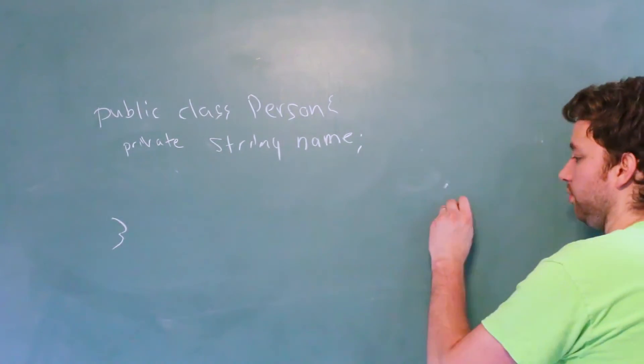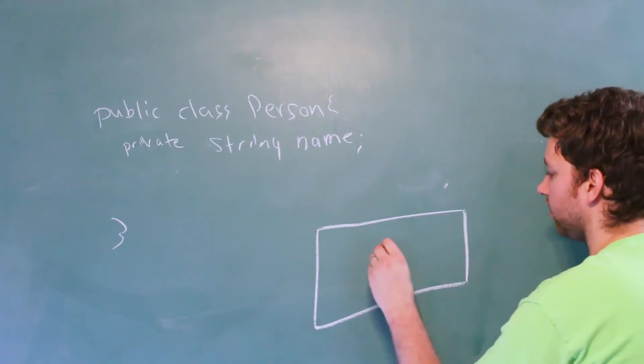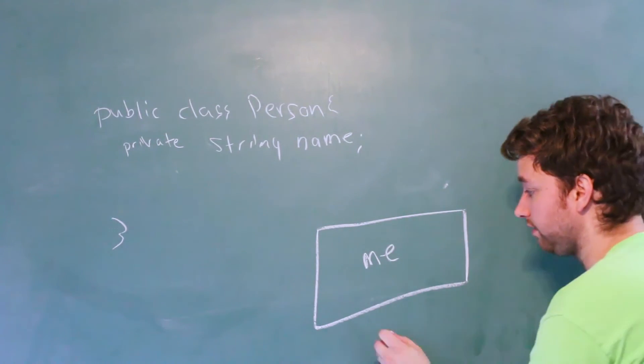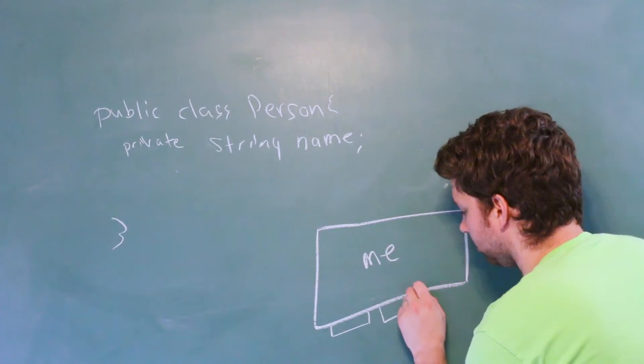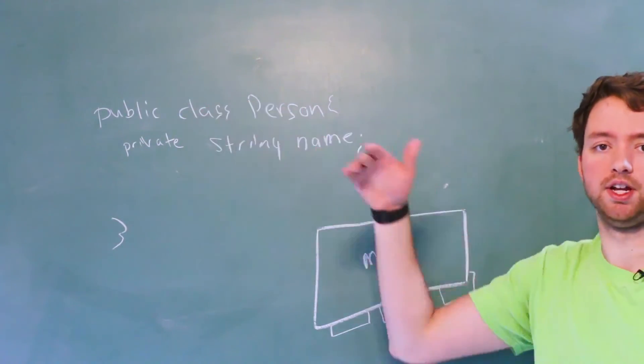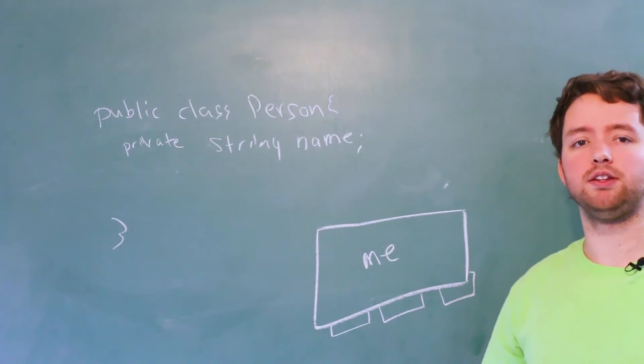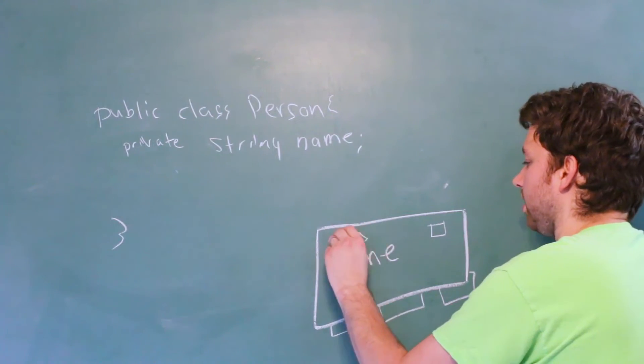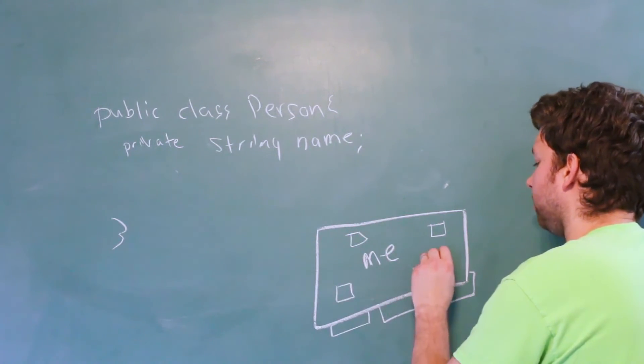So you can kind of think of it like this. We have some object, we'll just call it me. And there's public stuff that's accessible outside, but then there's also internal stuff, private stuff that might be useful, but isn't necessarily there for everybody to use. You can think of those as just kind of hidden in the background. We can't access them from the outside,